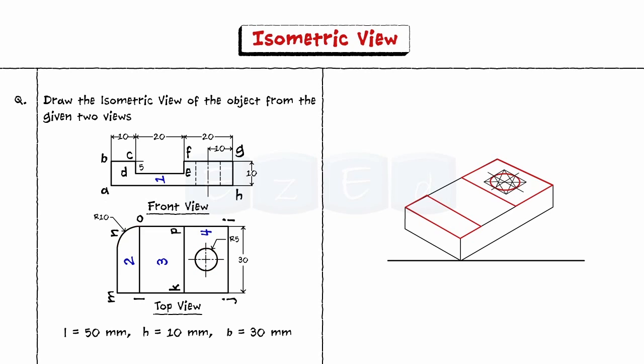Next we see a fillet of 10mm radius on plane 2. To draw the fillet first locate points O and N in the isometric view and draw perpendiculars from the points as shown. The perpendicular lines will intersect at a point. Taking this point as the center draw arc O and N.